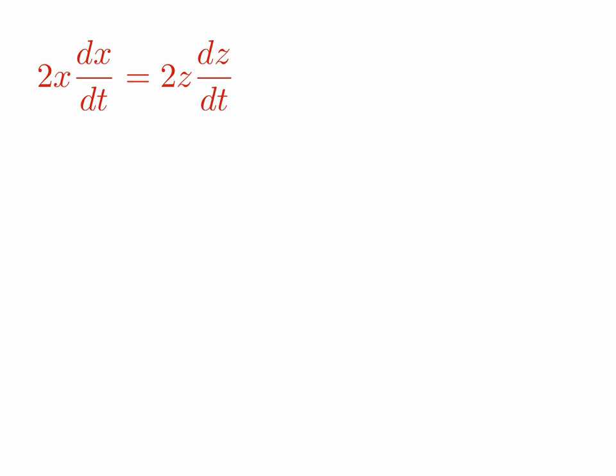So again, we have our equation relating the rates here: 2x dx/dt is equal to 2z dz/dt. And remember from the previous slides, we are solving for dx/dt. The 2's cancel, and then when we rearrange, we get dx/dt is equal to (z/x) times dz/dt. So we can find dx/dt if we know everything on the right-hand side of that equation. Namely, if we know z, we know x, and we know dz/dt.